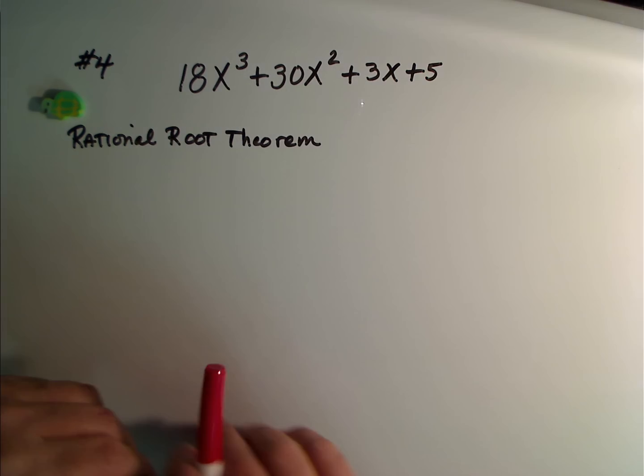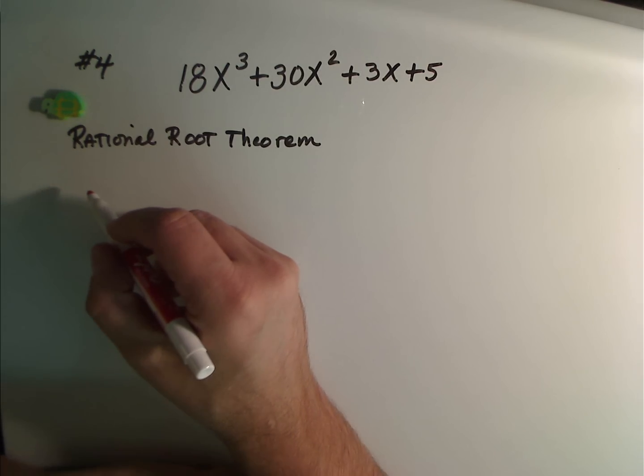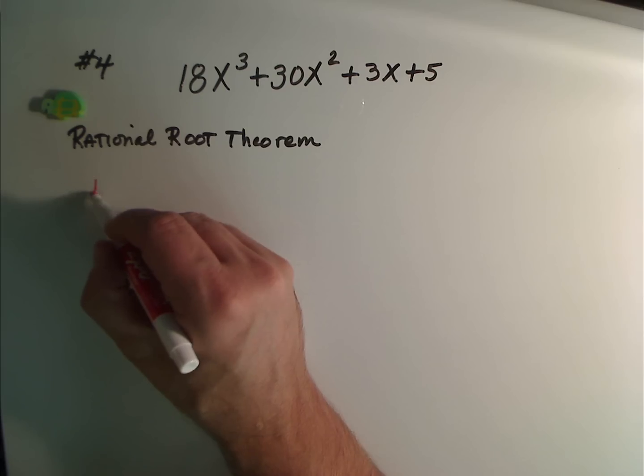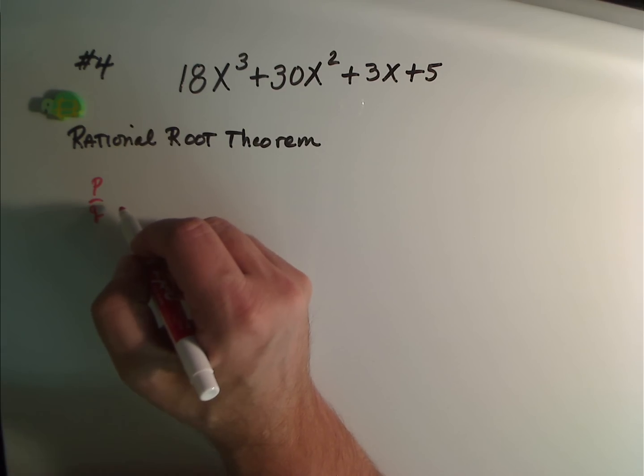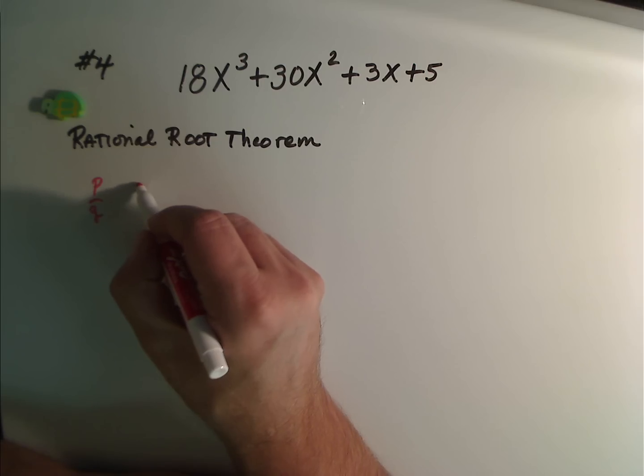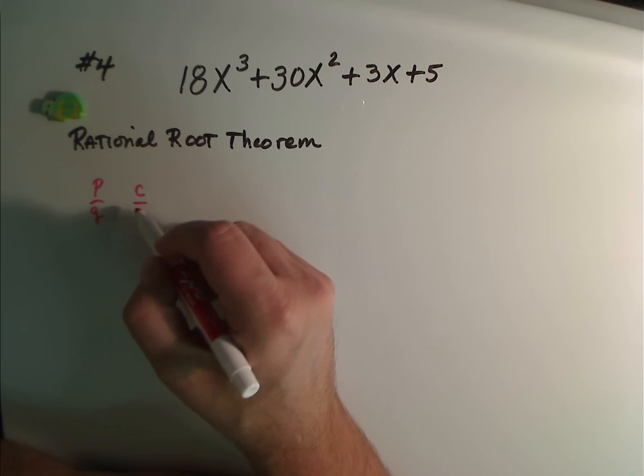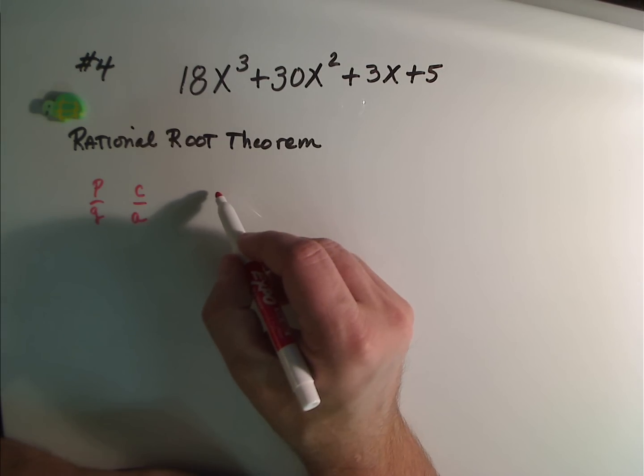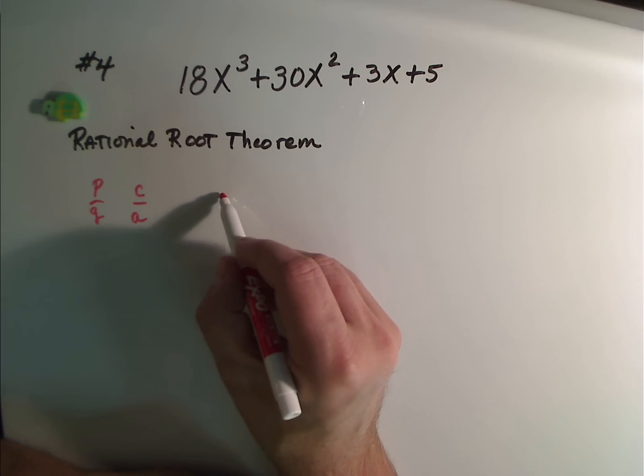When we want to look at the Rational Root Theorem, you'll see in your book that it tells you to look at P over Q. The problem is what's the P and what's the Q? I suggest that we use C over A. And this is because in the standard form, polynomials are written like this.